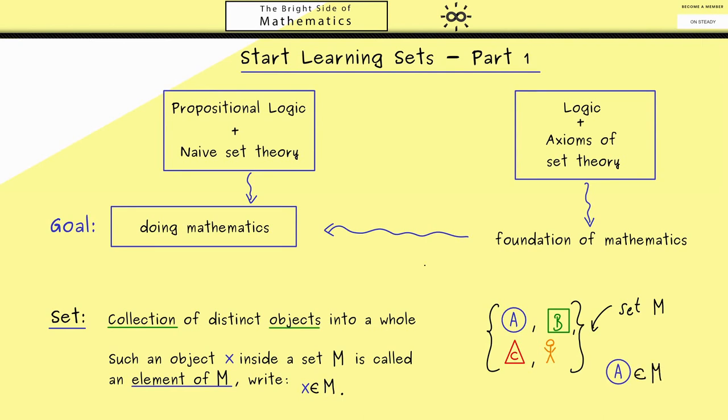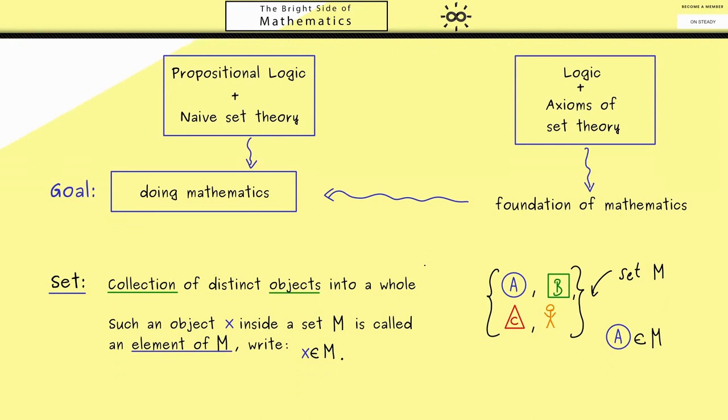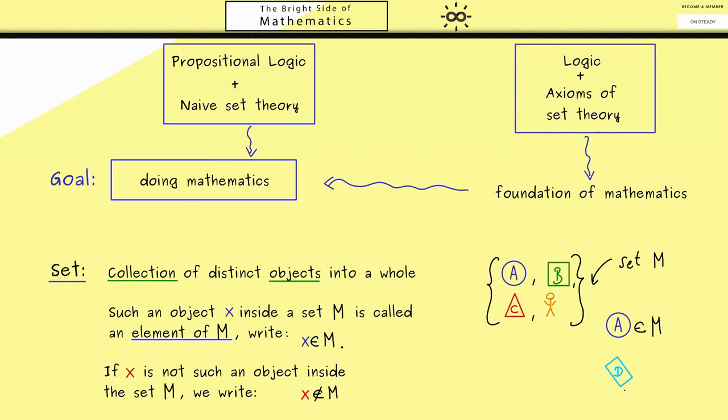Moreover if x is not such an object of the collection we write a similar thing: x is not an element in M. There we would use the line through the ∈. Now on the right hand side for the example we would write this D is not an element in M.